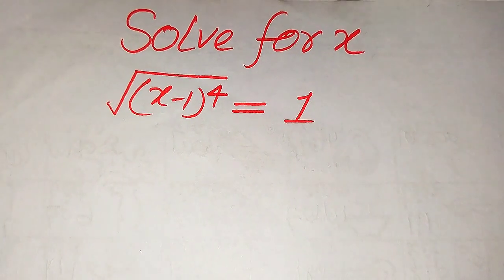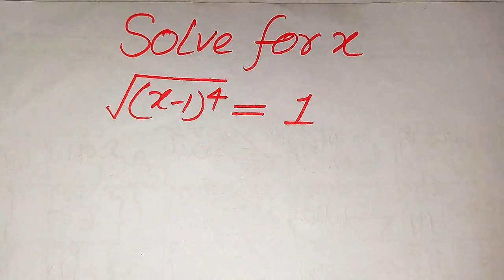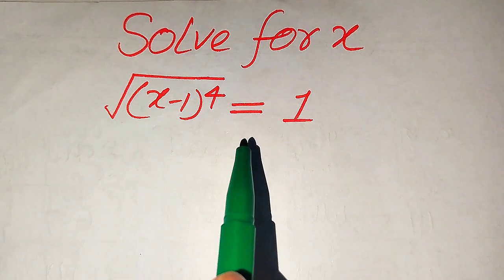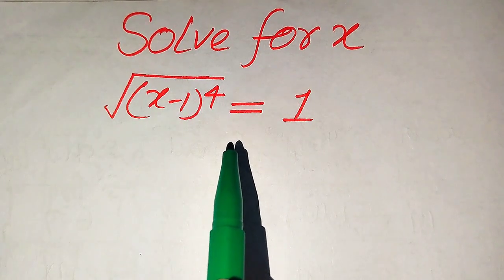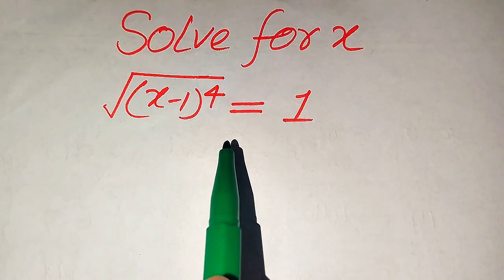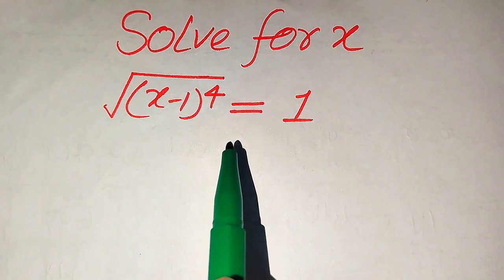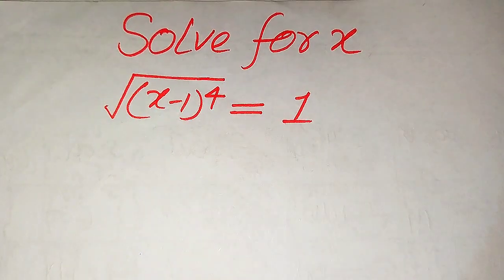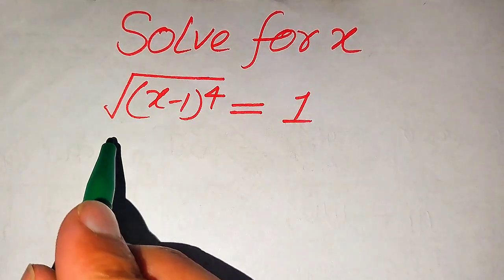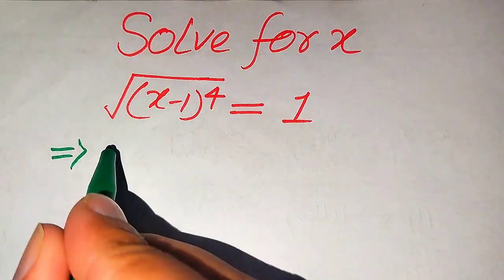Hello everyone. How to solve this problem for the values of x if we have the square root of (x minus 1) to the power of 4 equals 1. We solve for the values of x by first finding all the roots of this equation, and at the last we will verify which of the roots are solutions and which are extraneous roots.